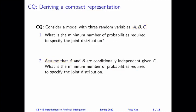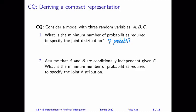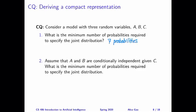The previous question told us that unconditional independence assumptions can help us derive a more compact representation. What about conditional independence assumptions? Part 1 is exactly the same — we still need 7 probabilities to represent the joint distribution. In part 2, instead of unconditional independence, we now know a conditional independence relationship: we assume that A and B are conditionally independent given C. Pause the video and think about what is the minimal number of probabilities needed to specify the joint distribution, then keep watching.